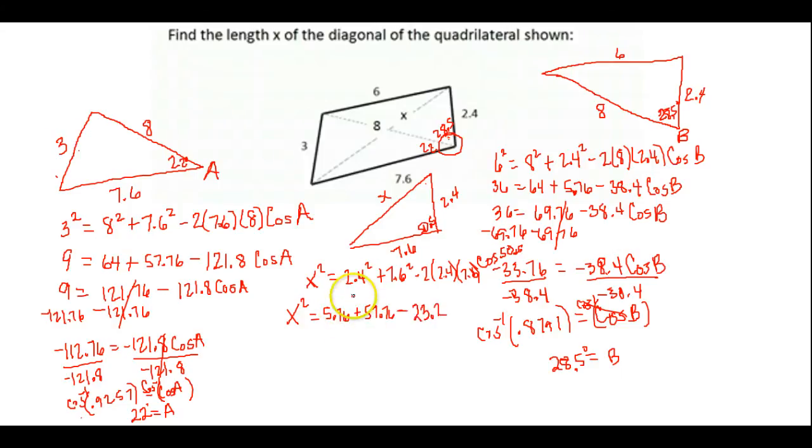So I've done that. 2.4 squared is 5.76. 7.6 squared is 57.76. And 2 times 2.4 times 7.6 times the cosine of 50.5 is negative 23.2, the negative coming from the minus here. All right, now what we need to do is add and subtract here. So add these numbers and subtract 23.2. And that gives me 40.32 is equal to X squared.